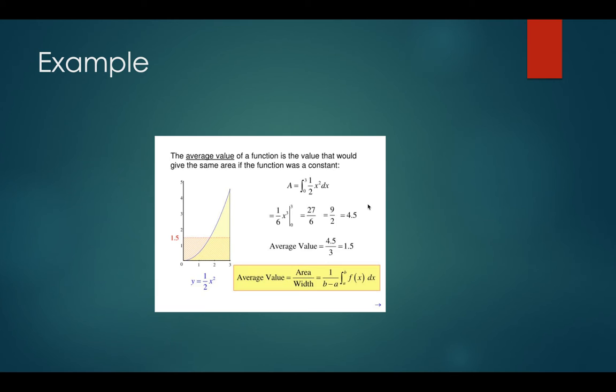Our area is going to equal the integral from 0 to 3 of 1 half x squared dx. So we do the anti-derivative and then figure out the definite integral there.